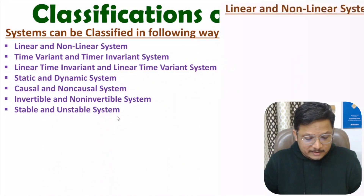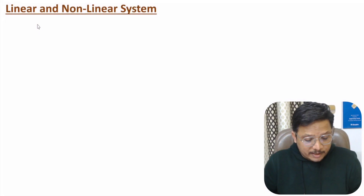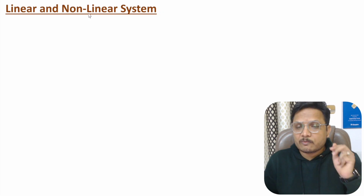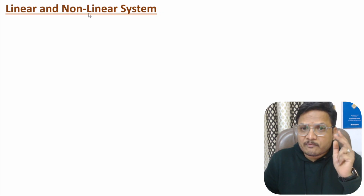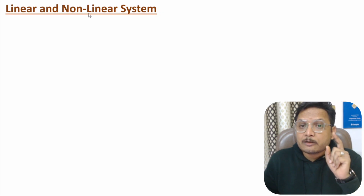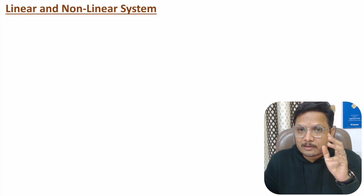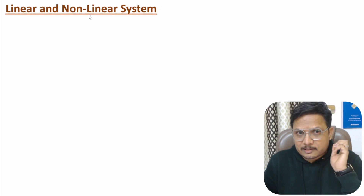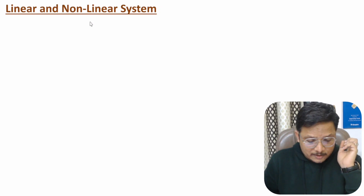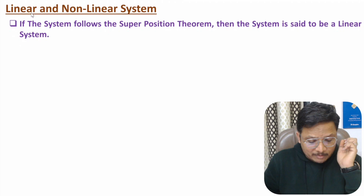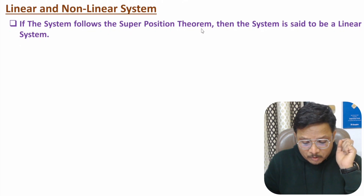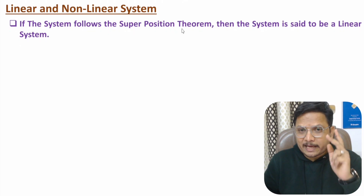First of all, I will discuss about classification by linearity of the system. One should know that if a system follows the superposition theorem, then one can say the given system is a linear system. So linearity of the system can be identified by using the superposition theorem.